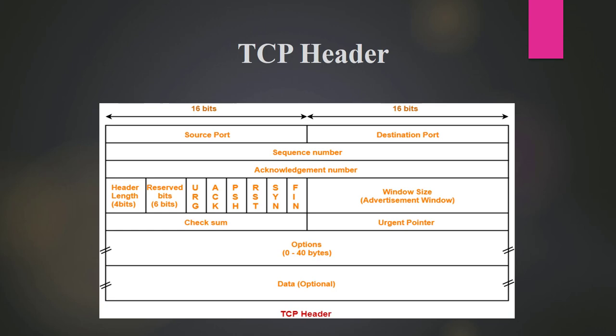As you can see, there are six flags in the TCP header: URG (Urgent), ACK (Acknowledgement), PSH (Push), RST (Reset), SYN (Synchronize), and FIN (Finish). The Urgent flag is used to deliver data urgently. SYN is used to establish a connection; FIN is used to terminate a connection. When using Nmap, I'll show you how these flags are sent to the destination and how the destination responds.